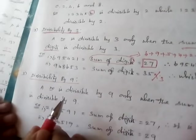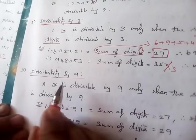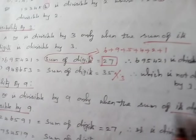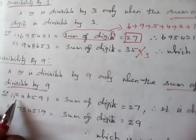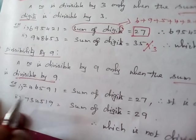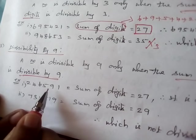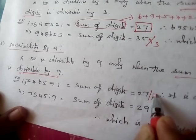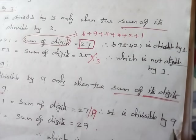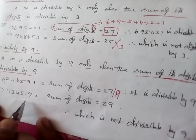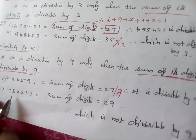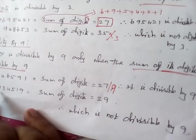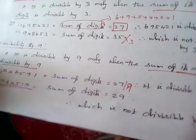Divisibility by 9: a number is divisible by 9 only when the sum of its digits is divisible by 9. For example, 246591 — the sum of digits is 2+4+6+5+9+1 = 27, and 27 is divisible by 9, so the entire number is divisible by 9. For 734519, the sum of digits is 29, and 29 is not divisible by 9, so the entire number is not divisible by 9.